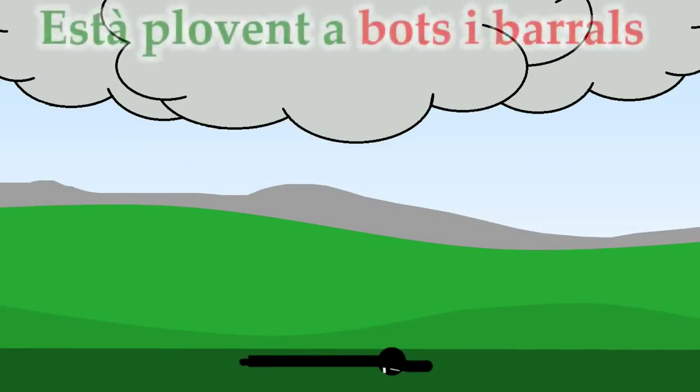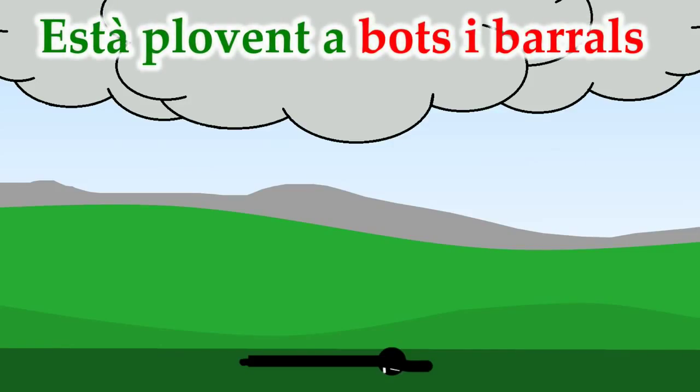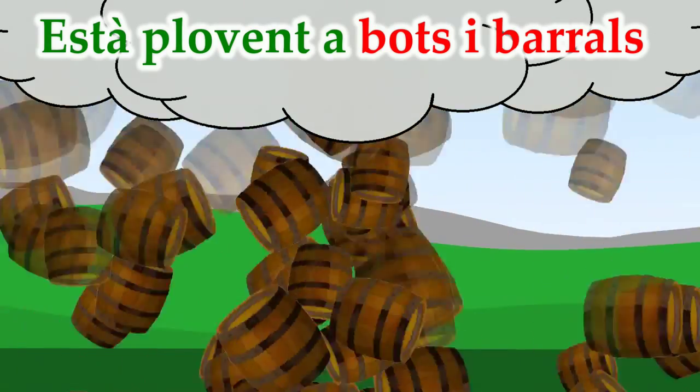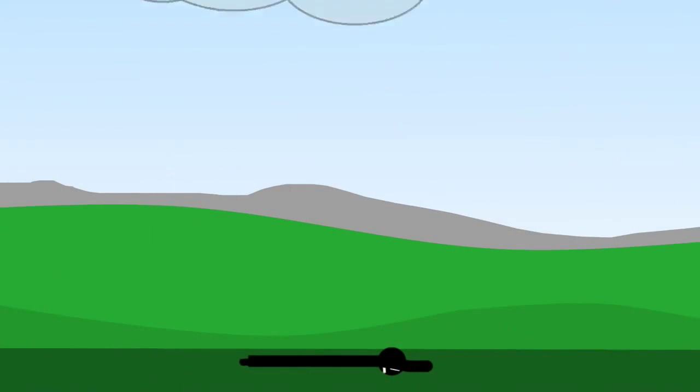And in Catalan they say, Està plovent a bots i barrals, which means, It's raining barrels and casks. Which I think would probably hurt the most out of all of them.